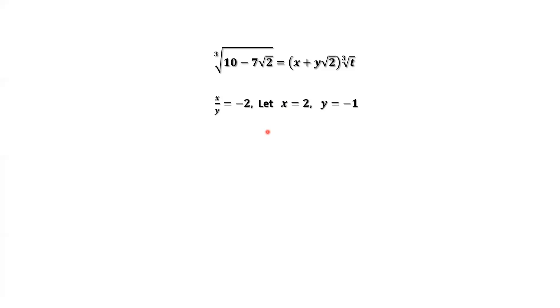Next thing we need to do is to find t. How to find t? From this equation, we can replace x, y by the two values. Solve this equation to find t. Plugging x and y into this equation. Continue to simplify. We can find t equals one half.